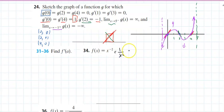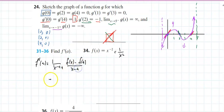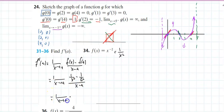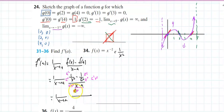This is 1/x². They want us to find the slope of the tangent. I'm going to take f'(a) equal to the limit as x approaches a of f(x) minus f(a) over x minus a. f(x) is 1/x², minus 1/a² over x minus a. This is a complex fraction. The LCD for the top and bottom combined is a²x².